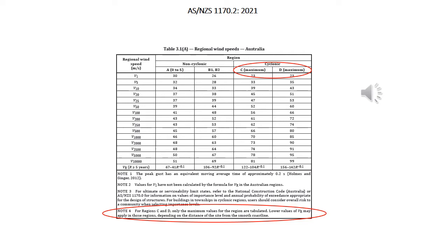The new Table 3.1A in 1170.2 2021 for Australian regional wind speeds is not very different from the 2011 version. The parts that differ, ringed in red, relate to cyclonic regions C and D — emphasising that it's the maximum value right at the coastline — and a note explaining that wind speeds can be reduced depending on distance from the smooth coastline. The F_C and F_D uncertainty multipliers have been removed. A new climate change multiplier has been introduced to partially account for their removal, which will be discussed shortly.